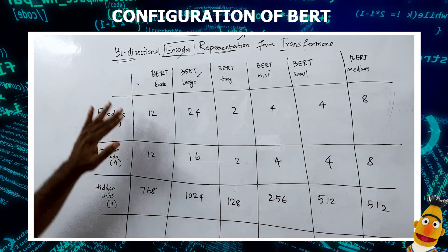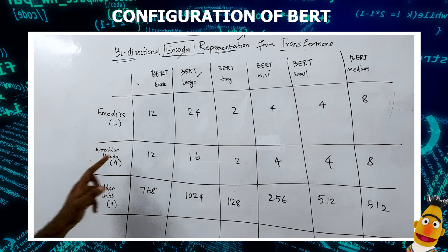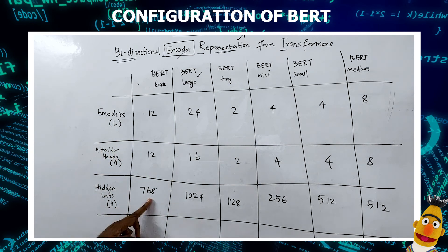In BERT base we have 12 encoders, 12 attention heads within each encoder, and 768 hidden neurons in the feed forward layers.